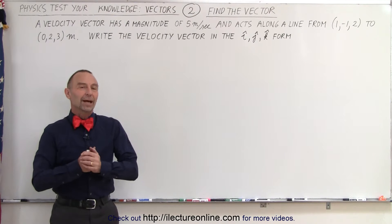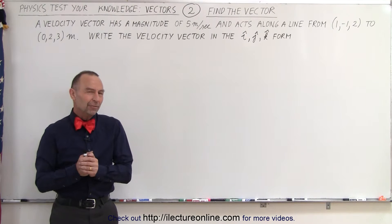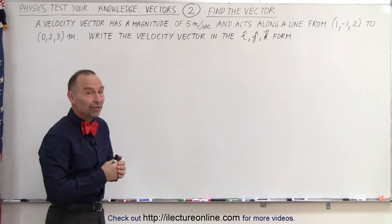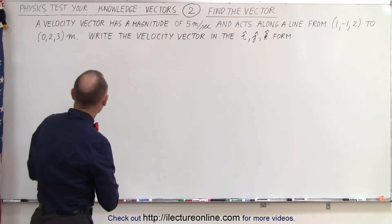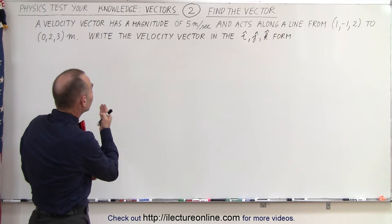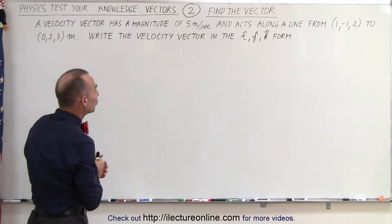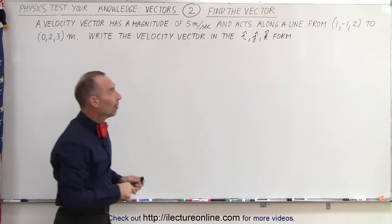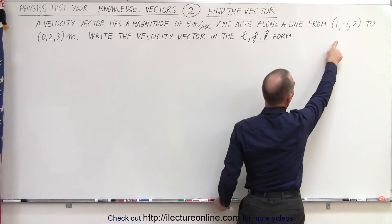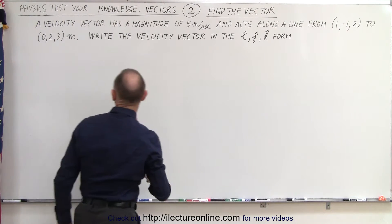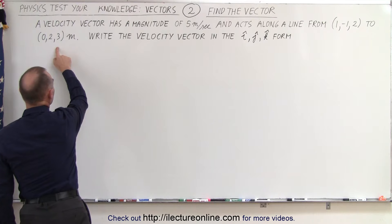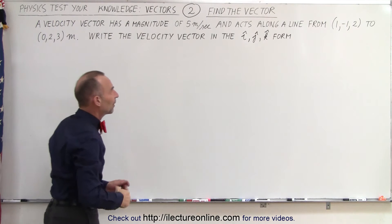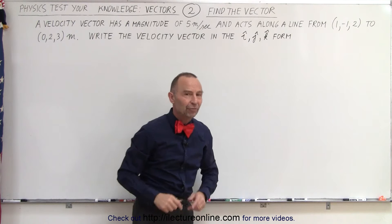Welcome to our lecture online. Now for something a little bit more challenging. We're asked to find a velocity vector that has a magnitude of five meters per second and acts along a line from point one, negative one, two to another point zero, two, three. It is in meters and we're supposed to write that velocity vector in the IJK form.